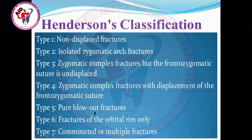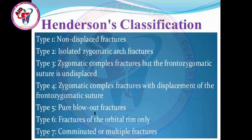A blowout fracture occurs when the wall of the orbit displaces outward from the orbital cavity. Most commonly this involves the orbital floor: the bone of the floor fractures and displaces downward into the maxillary sinus, while from the orbital cavity side the floor appears to blow outward. Blowout fractures are most commonly of the orbital floor. Type 6 in Henderson's classification is a blowout fracture — if it is an isolated orbital floor fracture with outward displacement towards the maxillary sinus, it is called a blowout fracture.